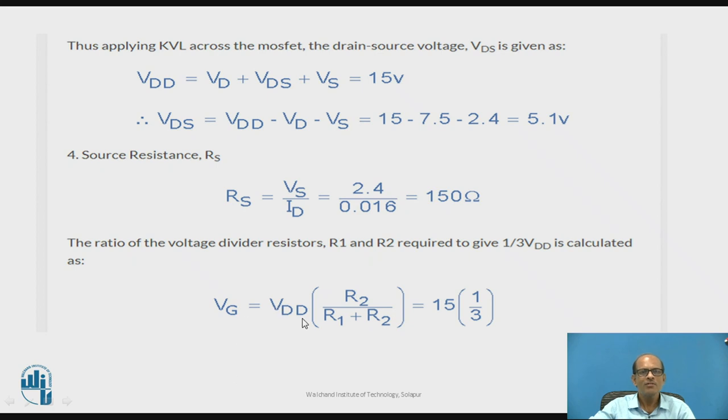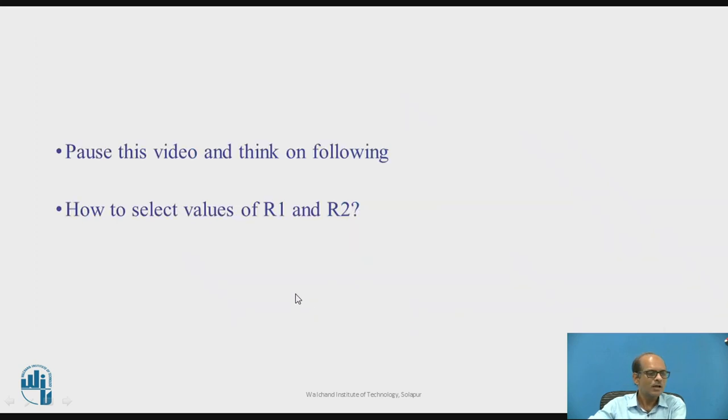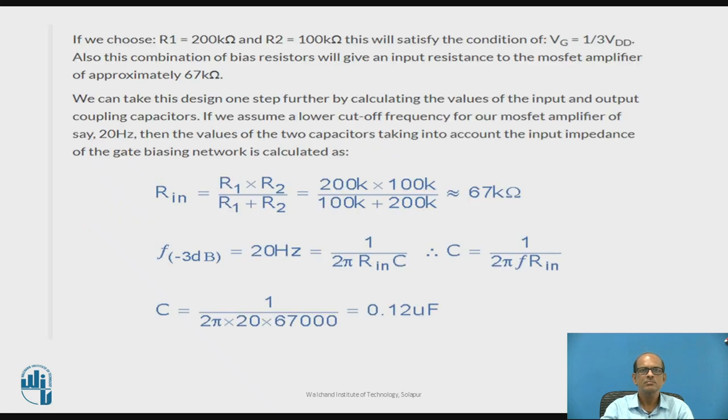VG is given by the equation R2 upon R1 plus R2 into VDD, so here 15 and it is 1 third, so VG we obtain as 5 volt and here ratio of R2 upon R1 plus R2 is 1 third. How to select the values of R1 and R2? R1 and R2 should not be selected too low or too high. Select R1 is equal to 200 kilo ohm, therefore R2 comes to be 100k, so that R2 upon R1 plus R2 will become 1 by 3. Rin is R1 parallel R2, so parallel combination comes 67 kilo ohm, that is the input resistance of amplifier.